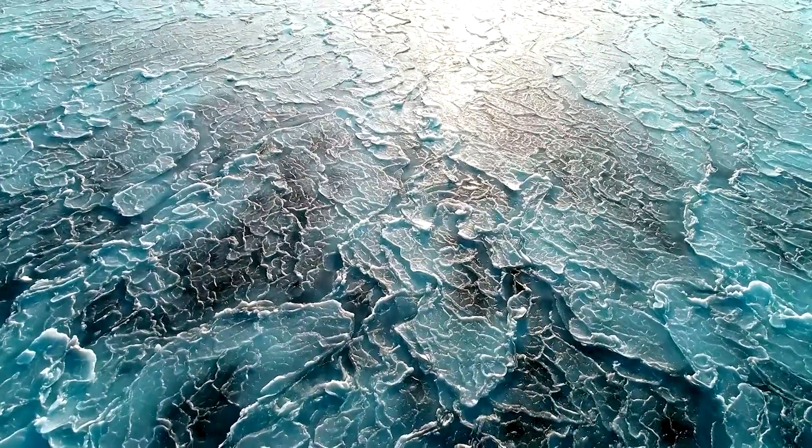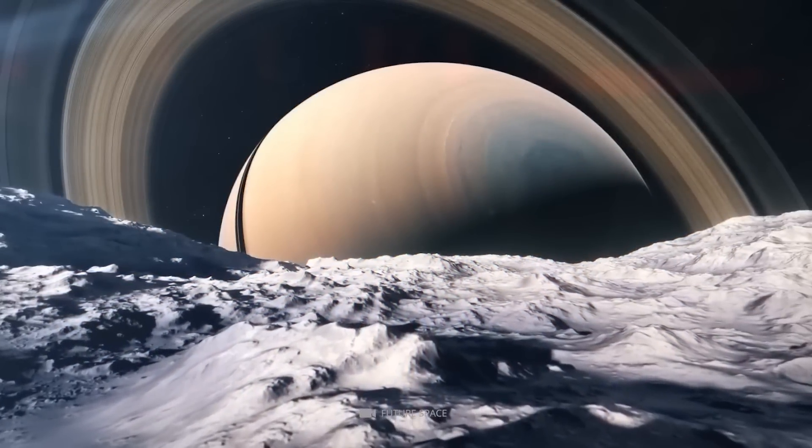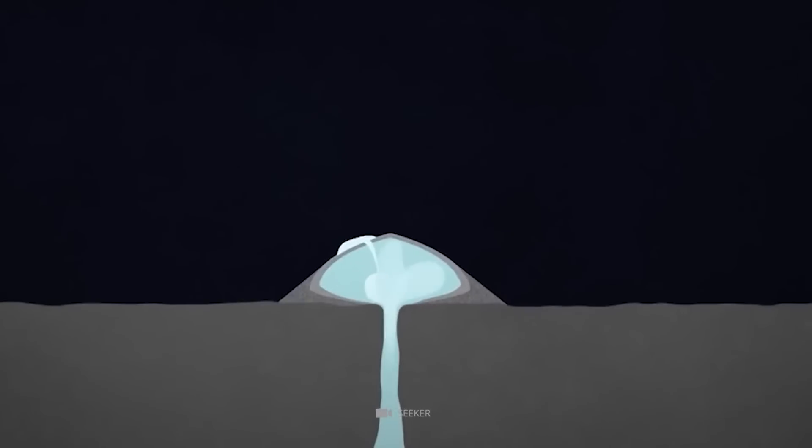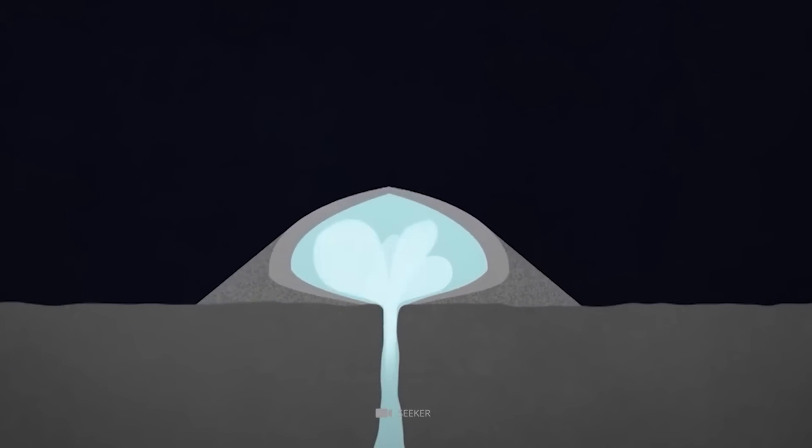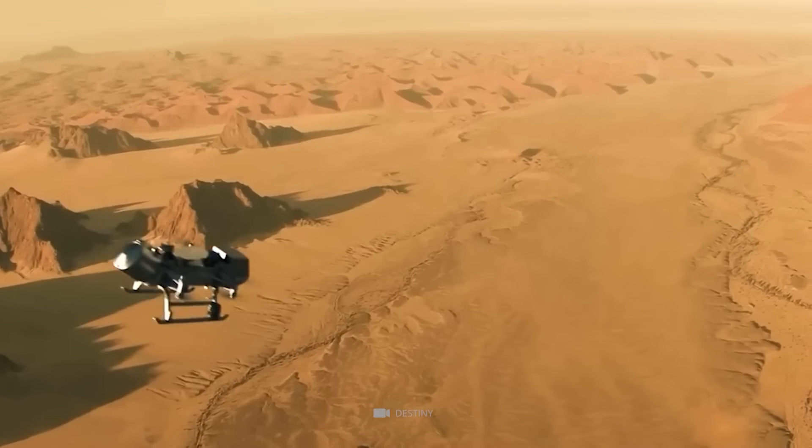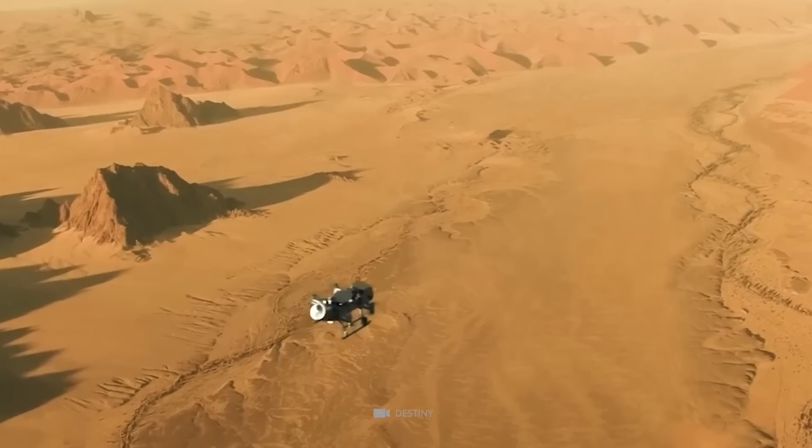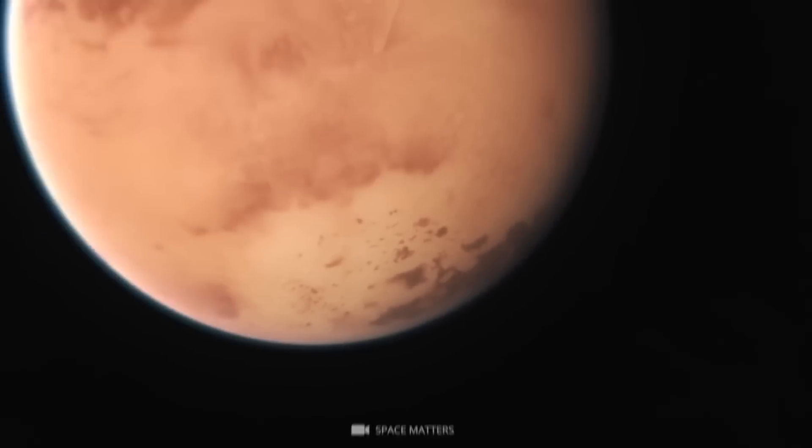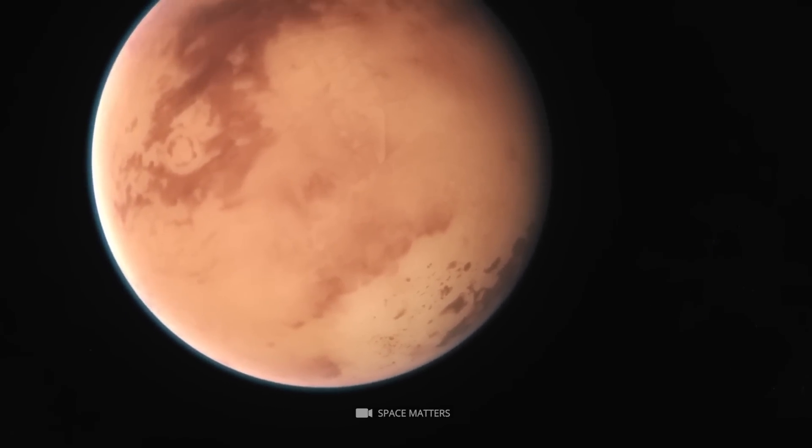The mountains on Titan are believed to be made of water ice, which is incredibly hard at these low temperatures, and may be formed by tectonic activity or cryovolcanism, which involves the eruption of icy materials instead of molten rock. The dunes, on the other hand, are thought to be made of hydrocarbon particles, such as methane and ethane, which are the main components of Titan's atmosphere.